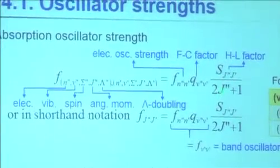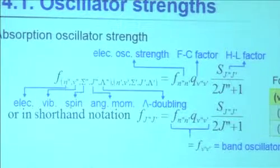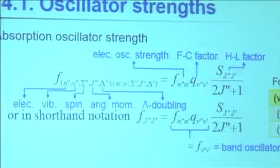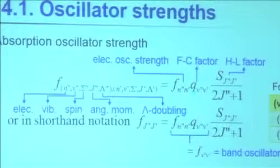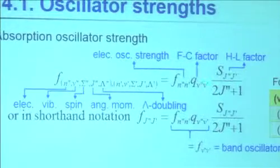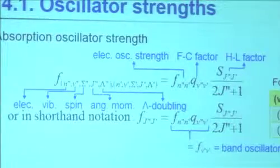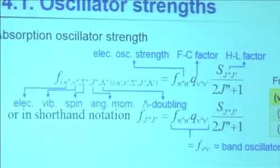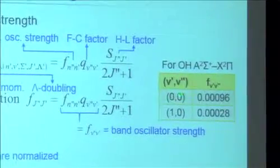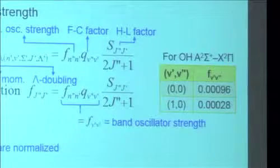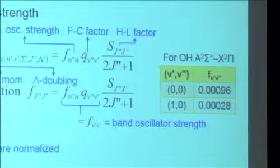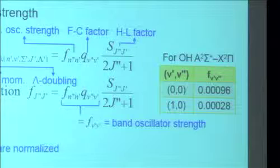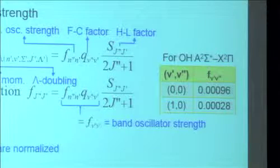The electronic strength comes from quantum mechanical calculations but is tabulated. The Franck-Condon factor comes mostly from observations — it's a fraction; the most it can be is about a half. For OH, you'd look it up: for the zero-zero band at 306 nanometers, the oscillator strength is known to be 0.00096 within about two or three percent. If you decide you're going to look at a line in that band, the oscillator strength is already known.